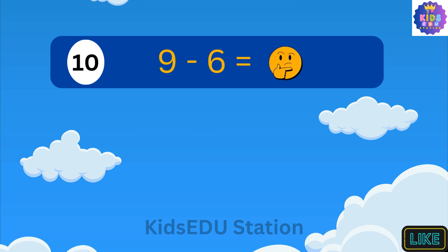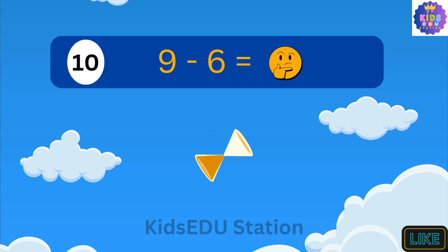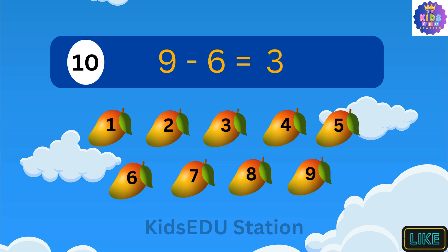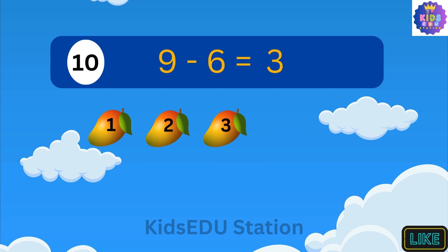What is 9 minus 6? 9 minus 6 is 3. Imagine you have 9 mangoes. You ate 6 of them. Now you have 1, 2, and 3 mangoes left.